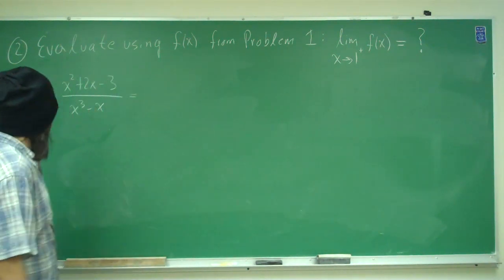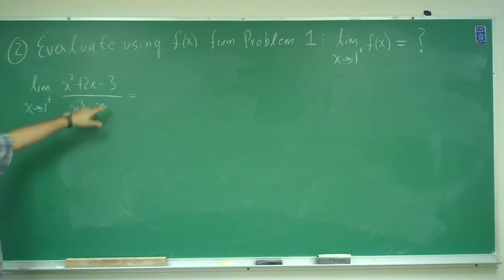Alright, so recall from problem 1, we had this function: x squared plus 2x minus 3, all that divided by x cubed minus x.